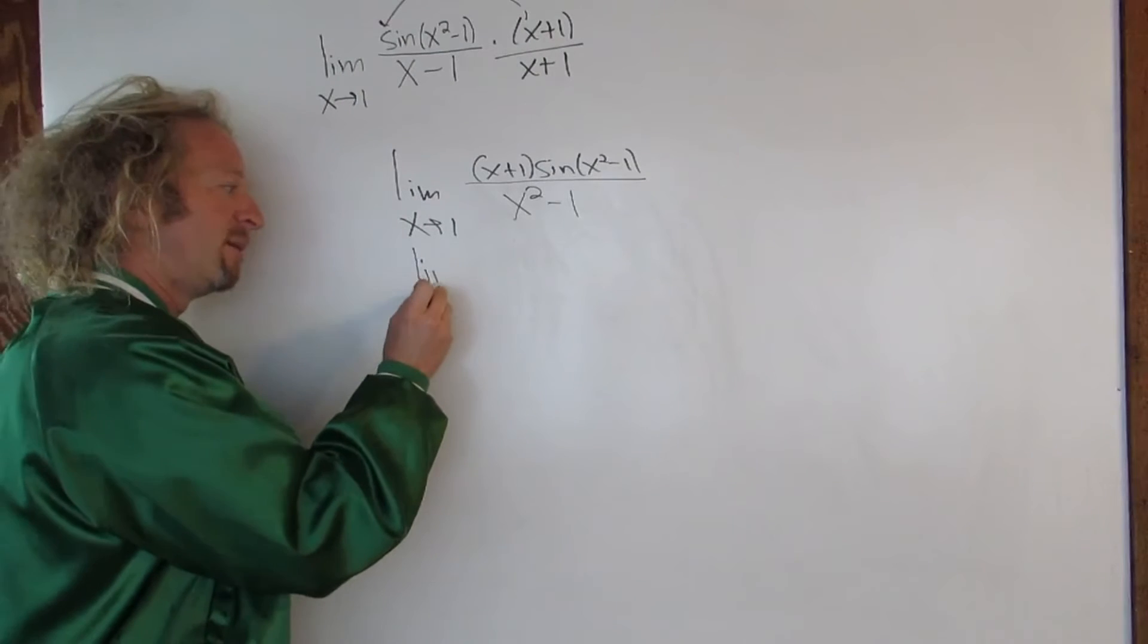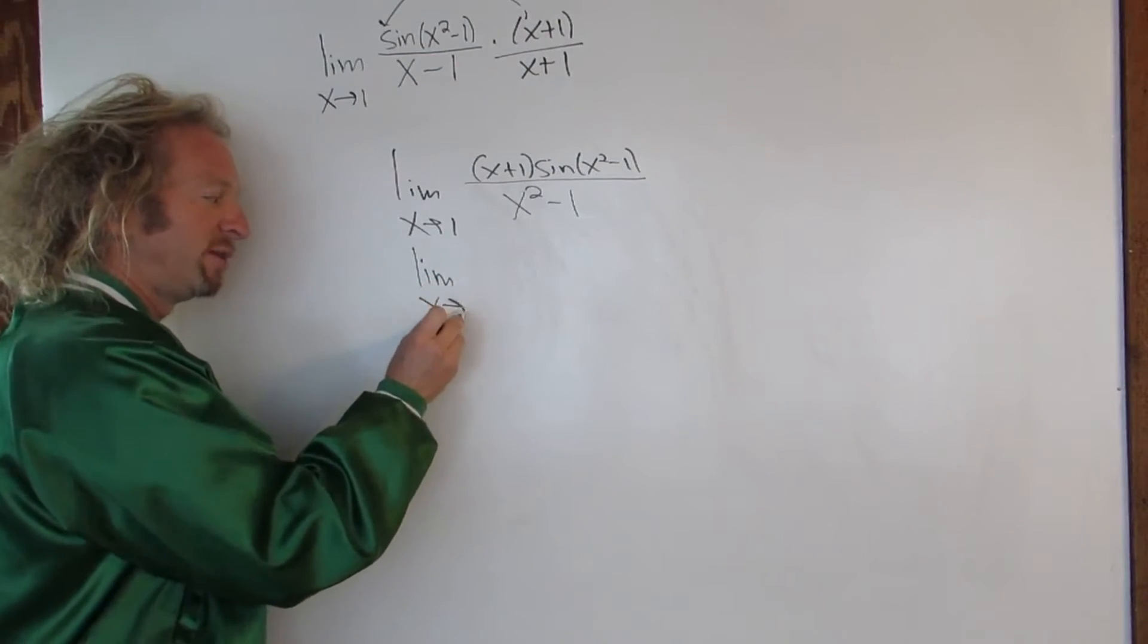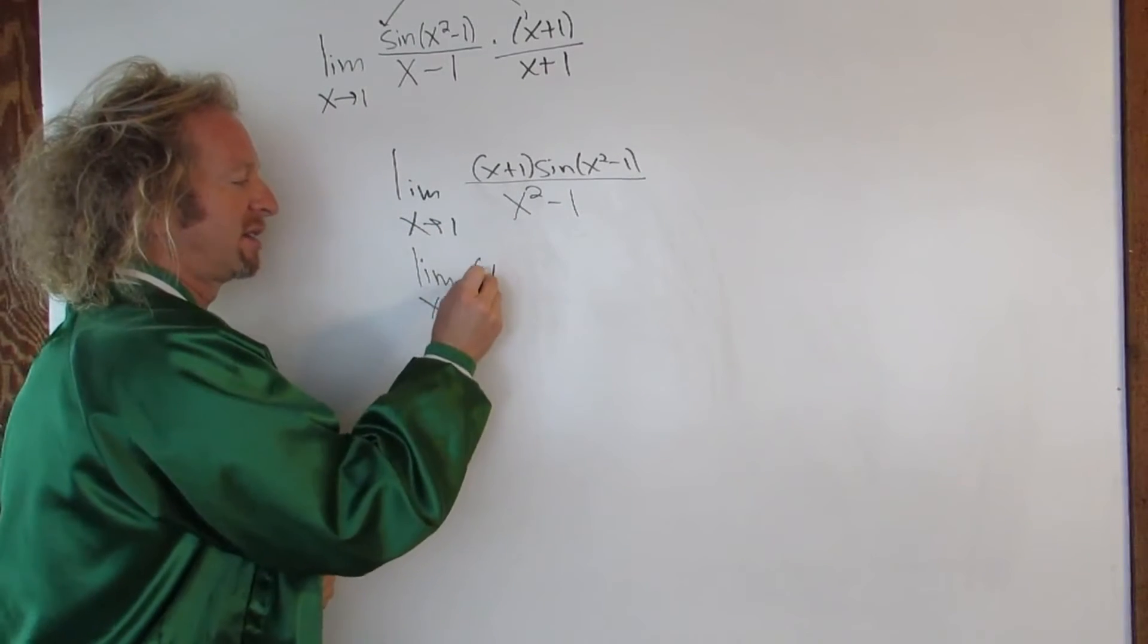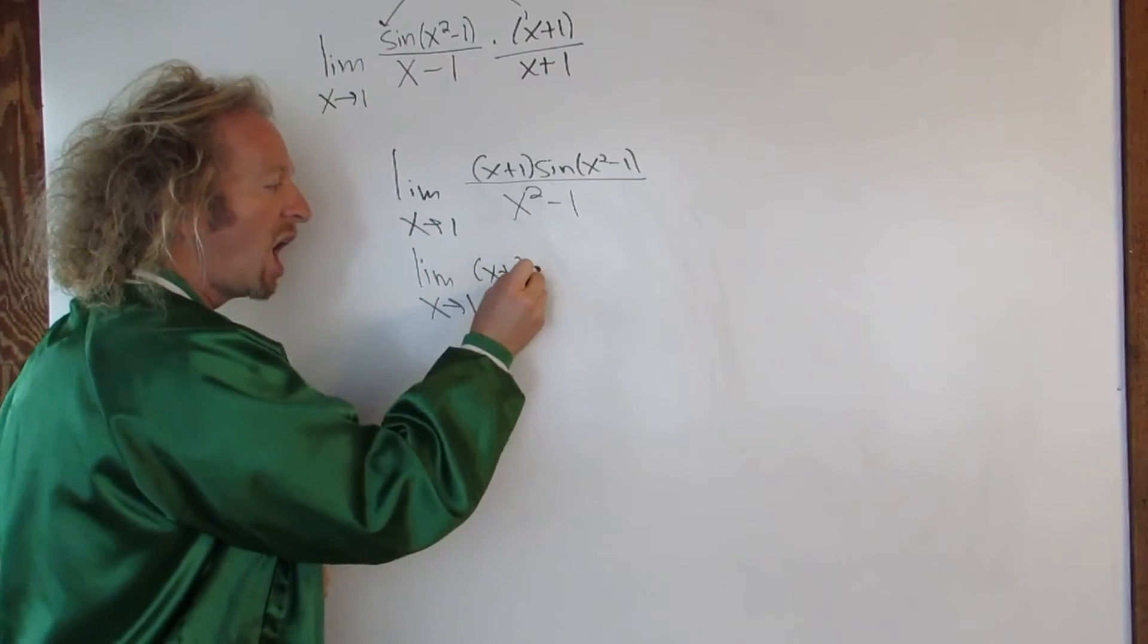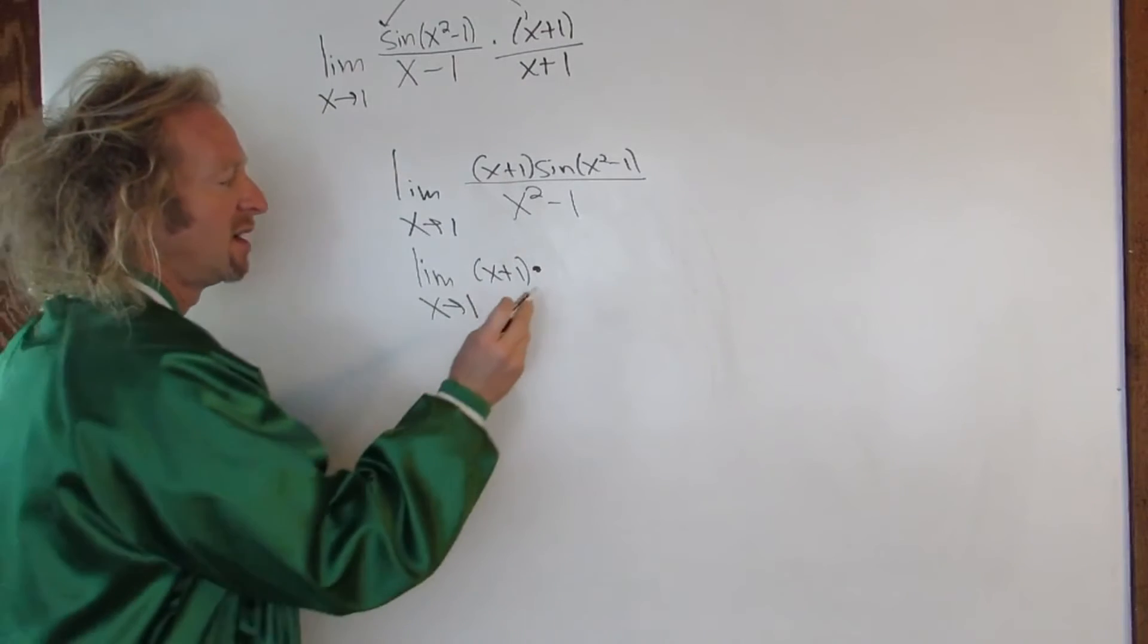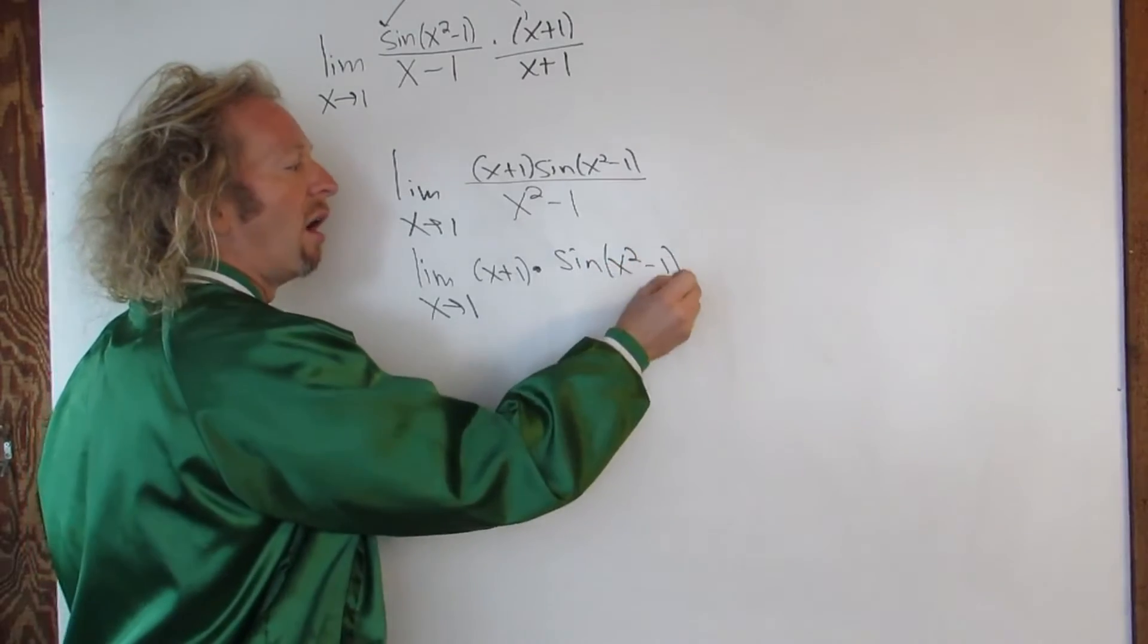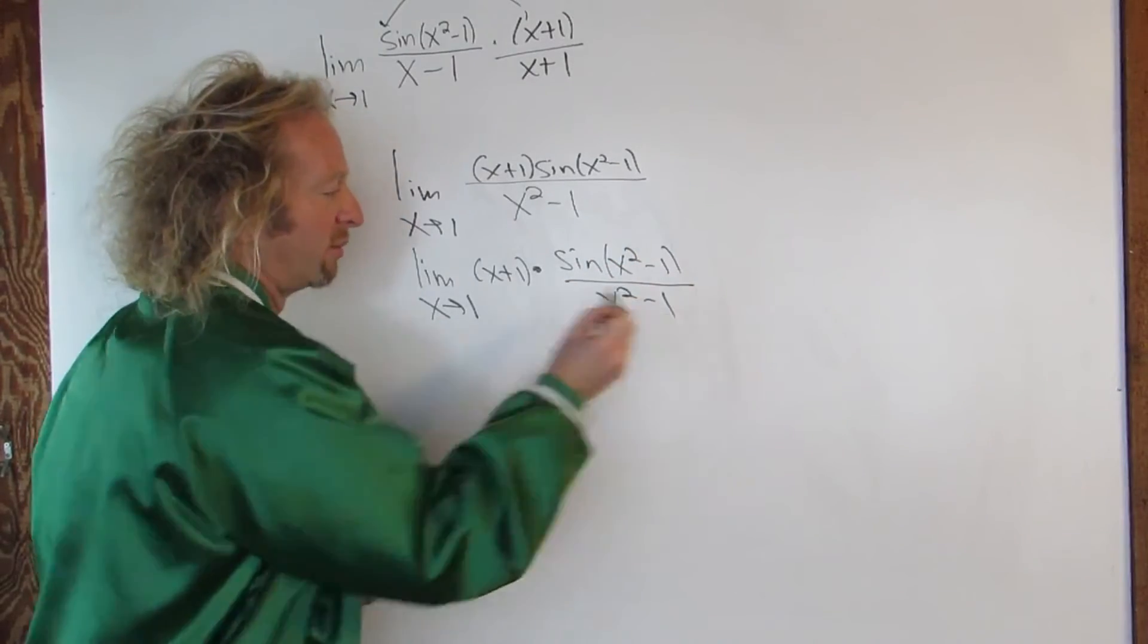Now we can write this as limit x approaches 1. The x plus 1, I'm going to write it outside like this. x plus 1 times. And this here will be the sine of x squared minus 1 over x squared minus 1.